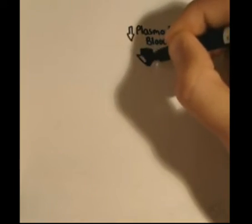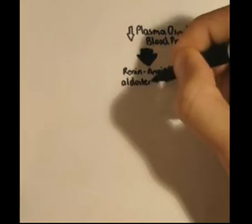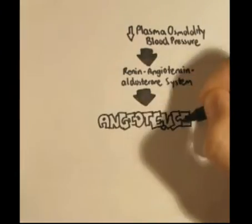This video has two parts. It will look at the roles angiotensin 2 has in the body and how it increases blood pressure, then look at a simplistic diagram to see how it is formed. Low plasma or low blood pressure in the body triggers the renin-angiotensin-aldosterone system. The main hormone out of all this is angiotensin 2.